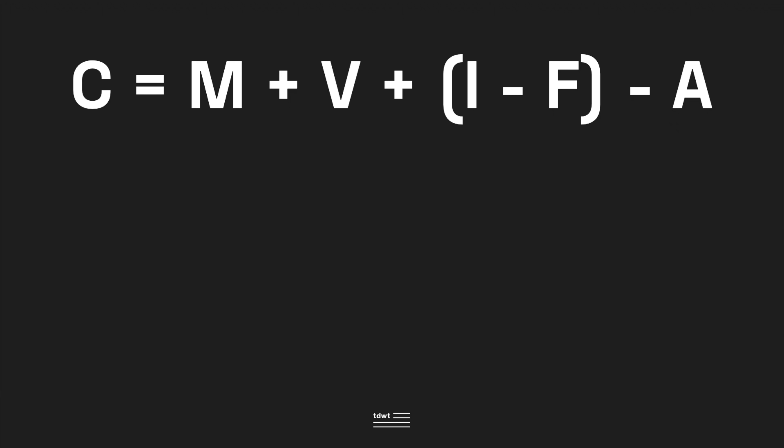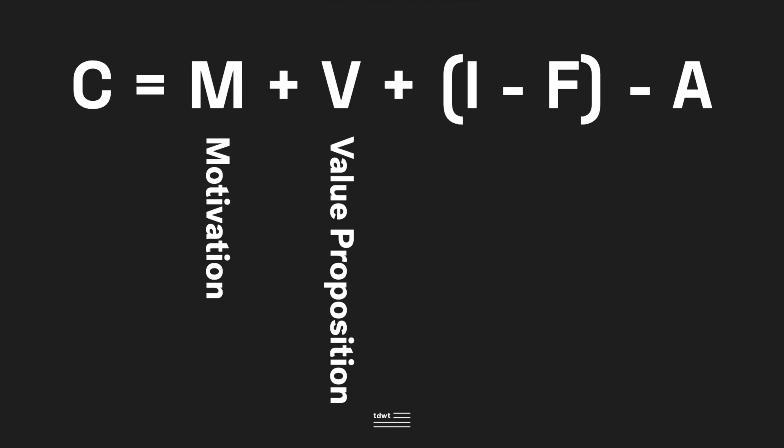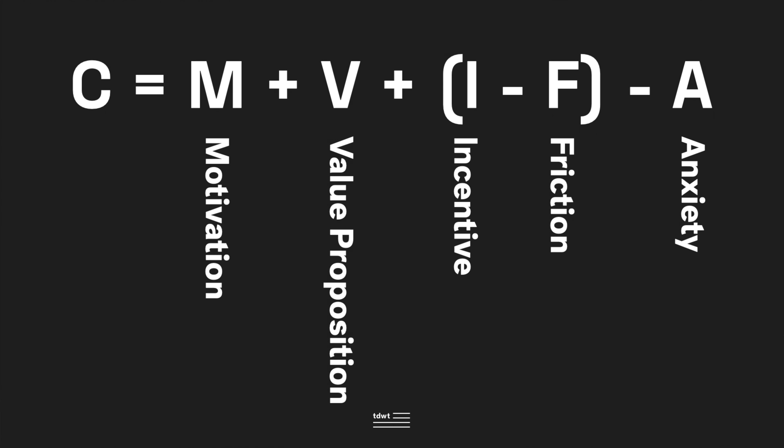Whenever we are trying to optimize a website for conversion rate, we always focus on this formula. C stands for conversion rate — out of a hundred, how many decide to convert. That equals the number of people who are motivated enough to buy from you, find that your value proposition is good enough, feel that they have an incentive to buy now, are not feeling friction — meaning they find it easy to purchase — and are not scared of purchasing from you. Those five things make up your conversion rate.